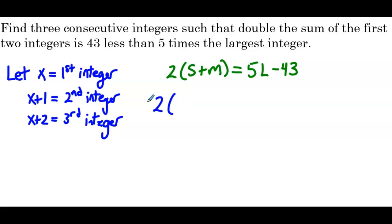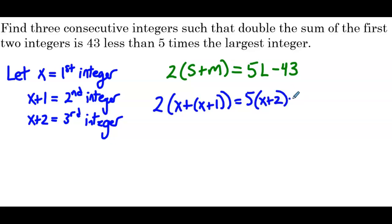Now let's put our let statement into this equation: 2 times (x plus x plus 1) equals 5 times (x plus 2) minus 43. Notice that every time I write x plus 1 or x plus 2, I put those quantities in parentheses in case there's some distribution to do, so I don't make a careless mistake in my work.